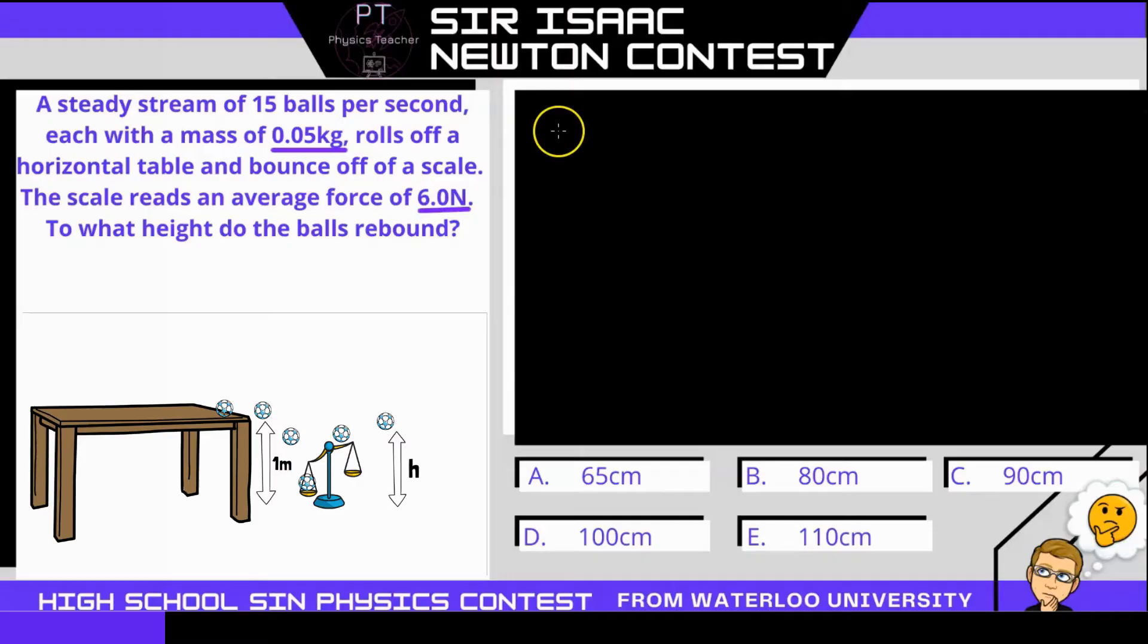Now, in this question, we're going to look at the concept of impulse being the change in momentum. So impulse is your net force that acts on an object over some time t. If we have 15 balls acting every second, and the scale reads an average of 6 newtons, then the impulse is going to be 6 newtons times 1 second, or 6 newton seconds. And that's going to be the impulse given by the scale every second.